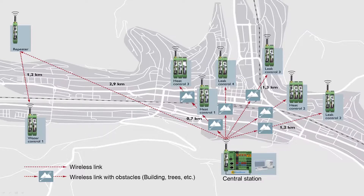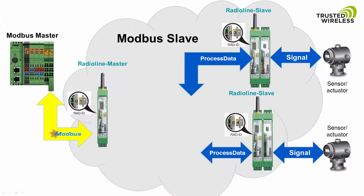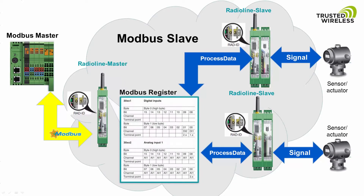In this mode, the complete Radioline network works as a Modbus slave. The process data of all I/O modules installed in the Radioline network are stored in a central Modbus table in the Radioline master. One wireless network can contain up to 99 I/O modules. If more I/O modules are needed, you can simply install additional Radioline masters or use the PLC Modbus RTU dual mode. The I/O data is converted to the Modbus protocol and stored in registers based on the I/O map address of the I/O module.